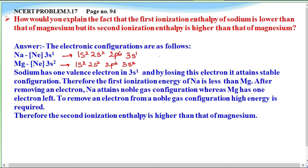Sodium has one electron extra. If it loses one electron, then sodium becomes Na-positive, and Na-positive's electronic configuration is stable — it is equal to neon. So the first ionization energy of sodium is less than that of magnesium. But the second time you want to remove the electron, it must come from the fully filled 2p6 orbital, which will require a lot of energy. That's why the second ionization enthalpy of sodium is higher than that of magnesium.